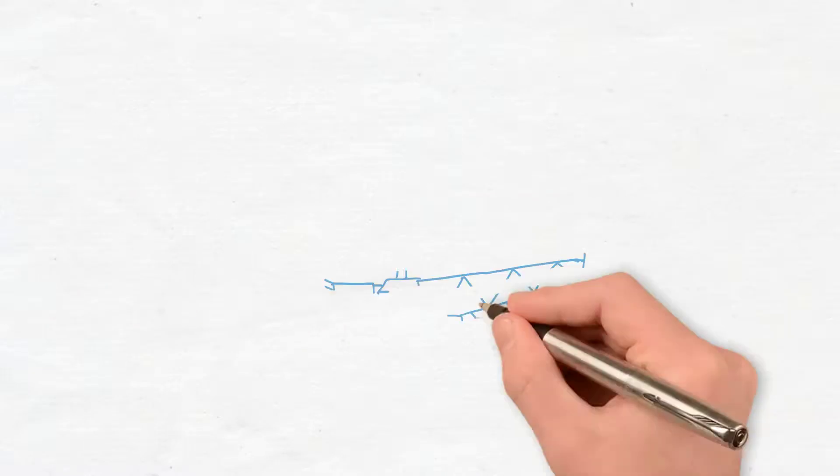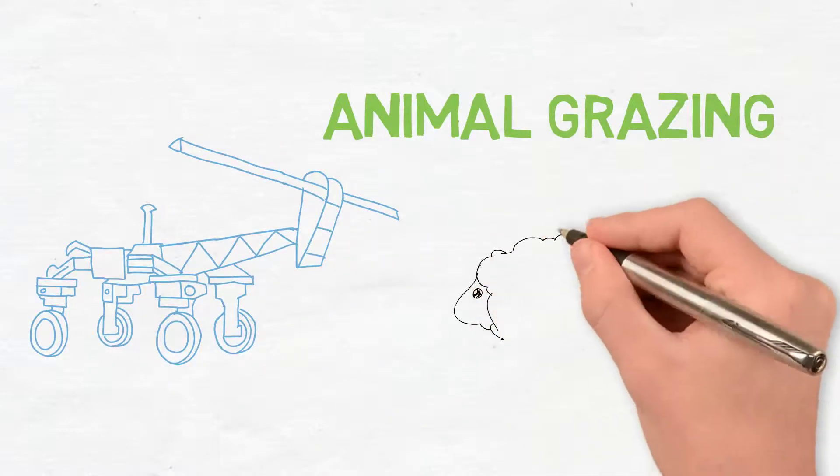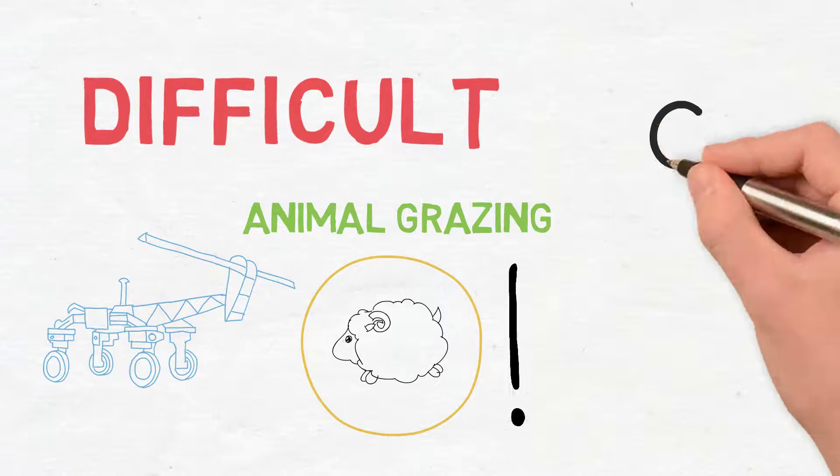We also have another bot in development that helps you with animal grazing and intensive grazing, which is a key part of regenerative agriculture that nobody talks about a lot because it's actually very difficult to graze animals right now, especially small ruminants.